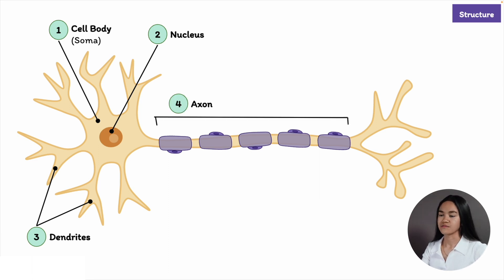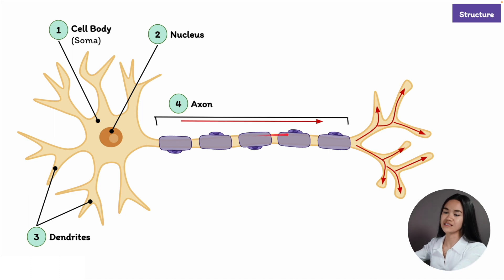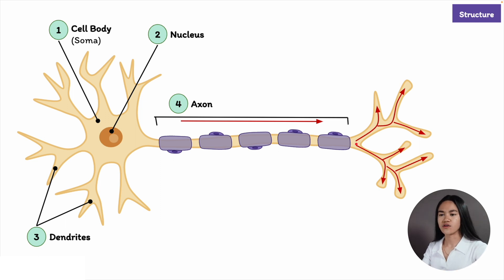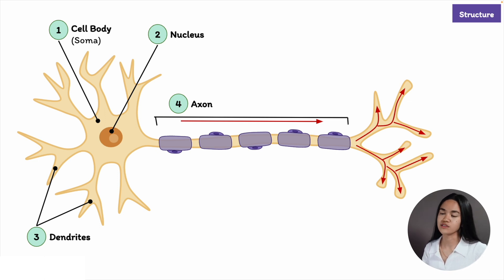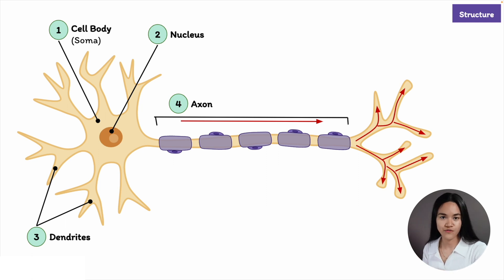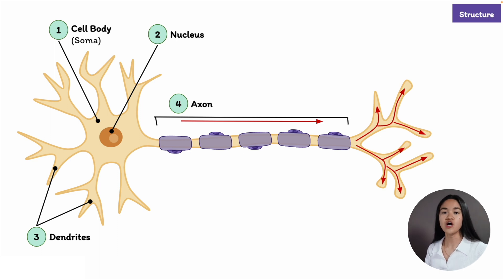Then the next structure is the axon. A typical neuron has a single axon extending from the cell body, and the axon transmits messages to other cells. They send signals away from the cell body and toward the synapses, where the neuron communicates with one or more other neurons. Axons are usually much longer than dendrites, and they can convey information over great distances using electrical impulses. When grouped together, the axons of neurons form the bundles we call nerves.